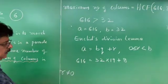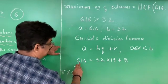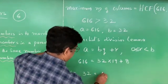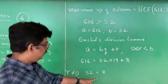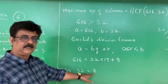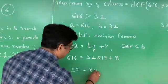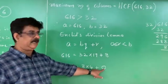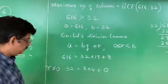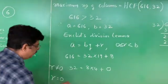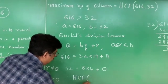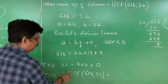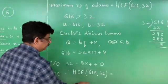For continuation, the previous divisor becomes the new a, and the previous remainder becomes the new b. So now a = 32 and b = 8. Since 8 × 4 = 32, the remainder is 0. So 32 = 8 × 4 + 0. The remainder r = 0, therefore HCF of 616 and 32 is equal to the divisor in this step, which is 8.